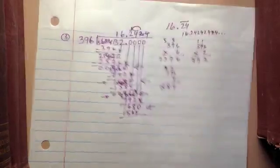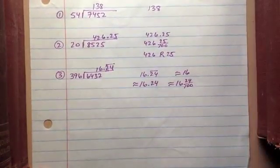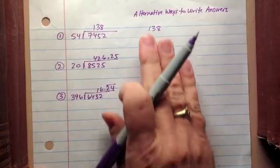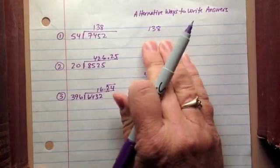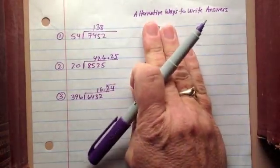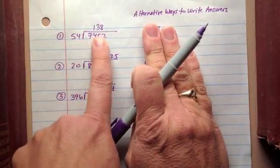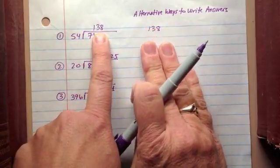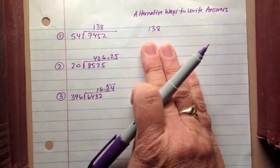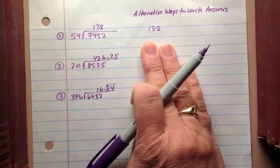And what I want to do is make sure that we understand that there are different alternative ways to write the answers for each of these problems. So you remember that in problem number 1, we had 138 for our answer. 138 is the answer. Really, there's only one way to write it for this type of problem because it is a whole number.